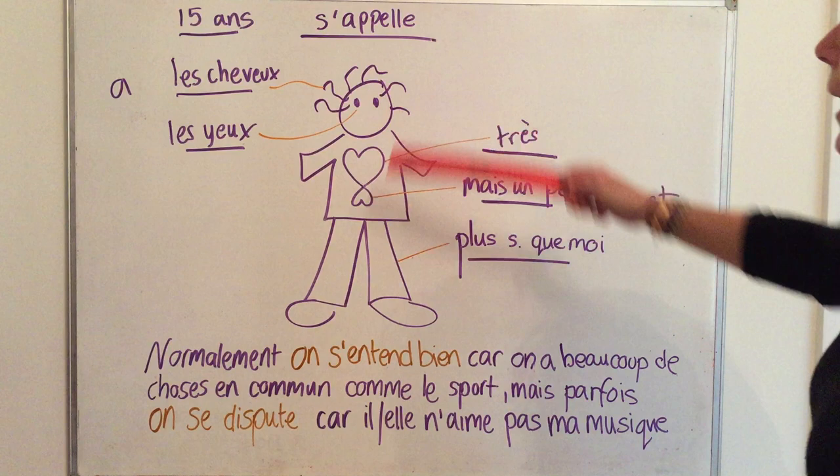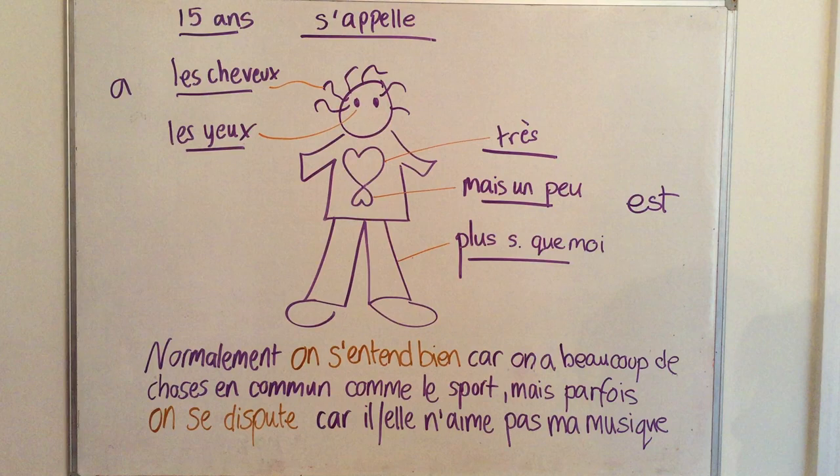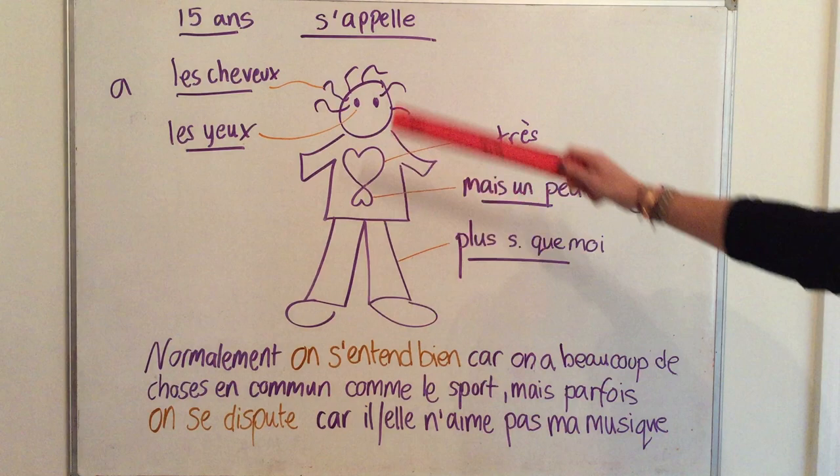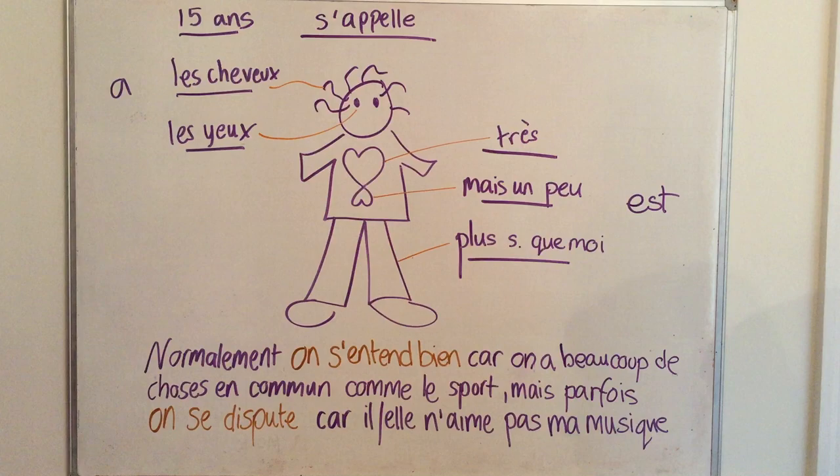The first thing you're going to need to say about the member of your family or your friend is 'il ou elle s'appelle'. I don't want 'qui s'appelle' — 'qui s'appelle' means 'who is called'. You can say 'mon meilleur ami qui s'appelle', but that's a subordinate clause and you need to complete the sentence with a verb. For example: 'mon ami qui s'appelle Philippe a trois ans'. So I would recommend you start with s'appelle.